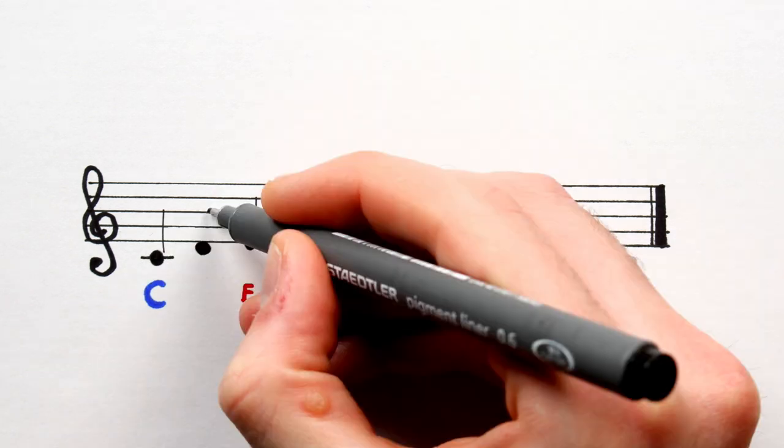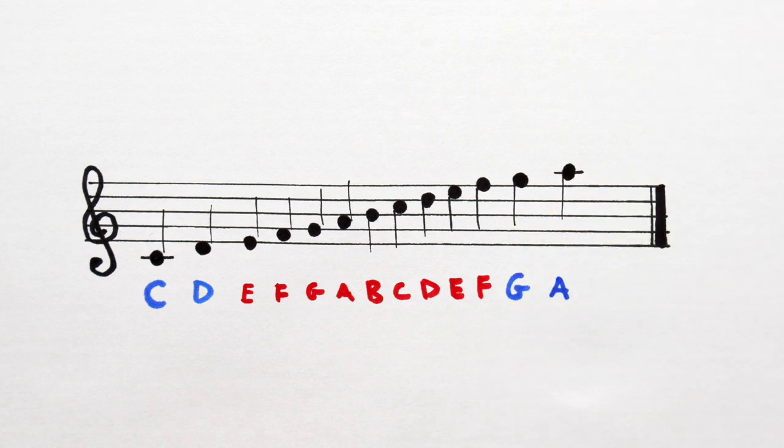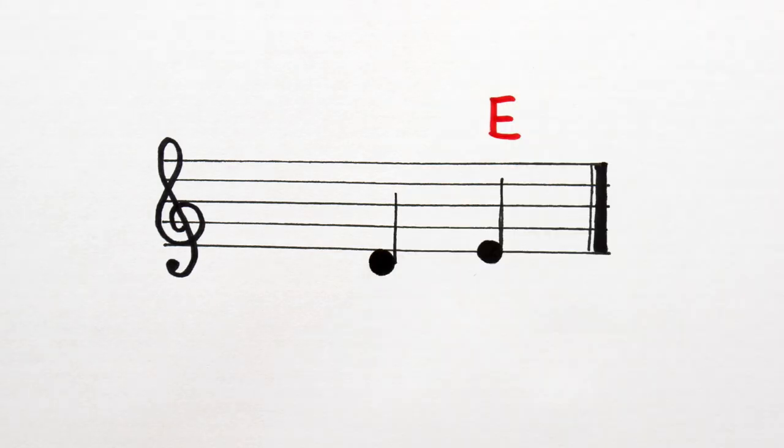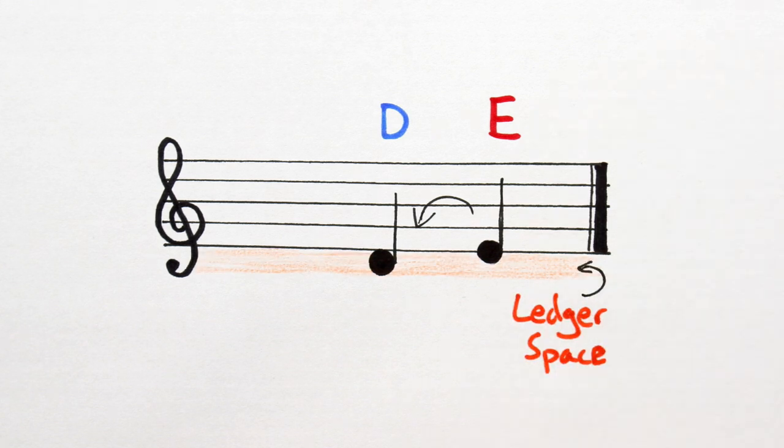Middle C, D, G and A. The note below E here is called D. It's drawn under the first line in what's known as the first ledger space below the treble stave.